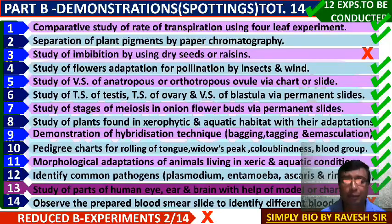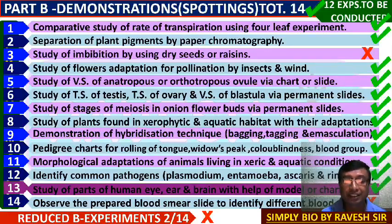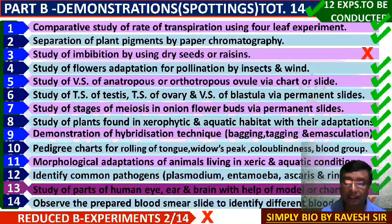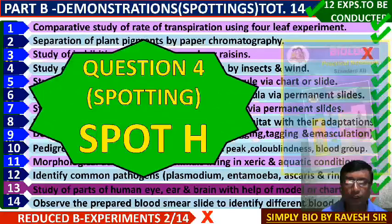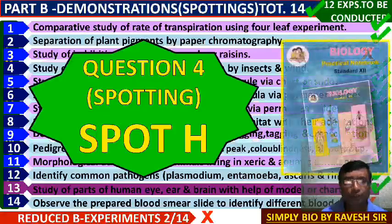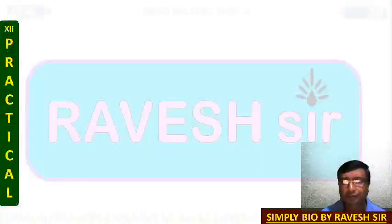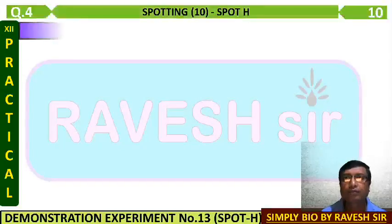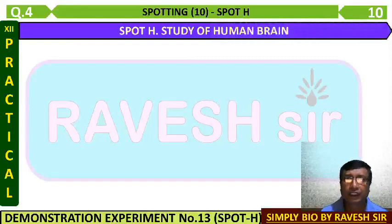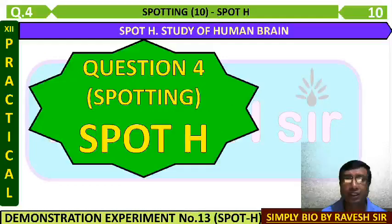For this experiment this year, the eye and ear parts have been deleted, so you don't have to study those. You have to study only the brain with a model or chart. So the spotting question for this year is the study of the human brain only - human brain is what we have to study this year.